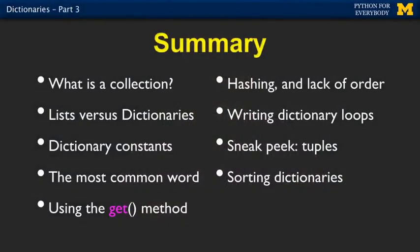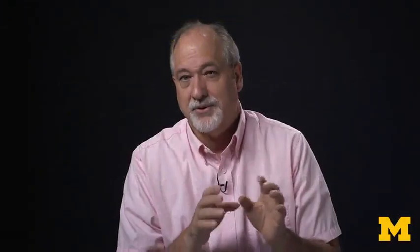So we have talked about dictionaries. We've compared them to lists. We've shown how to use the get operation. We've looped through files. We took a look at tuples. Tuples is what we're going to talk about next. And we're going to sneak peek. We'll talk about sorting dictionaries coming up next.